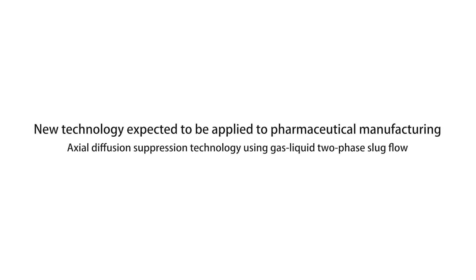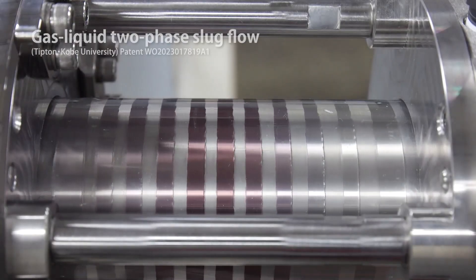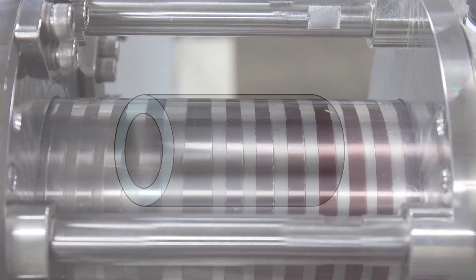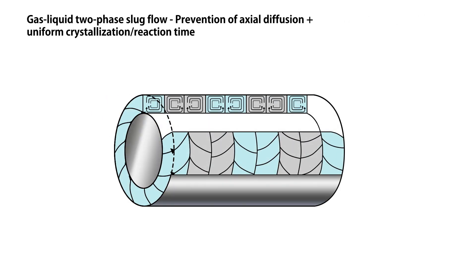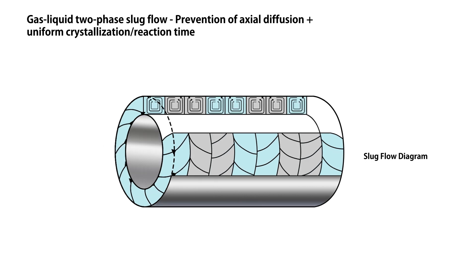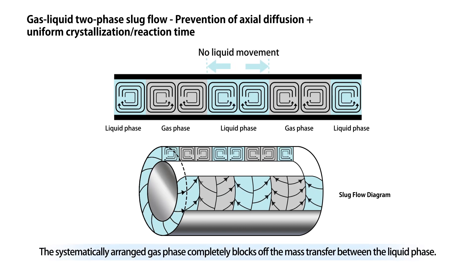We would like to introduce the gas-liquid slug flow jointly developed by Tipton and Kobe University. Gas-liquid slug flow is a process in which bands of liquid and gas phases are generated alternately by rotating the inner cylinder while continuously inflowing gas and liquid at a constant rate. Since the liquid phase is completely separated by the gas phase, there is no axial liquid movement and the variation in residence time is minimized.